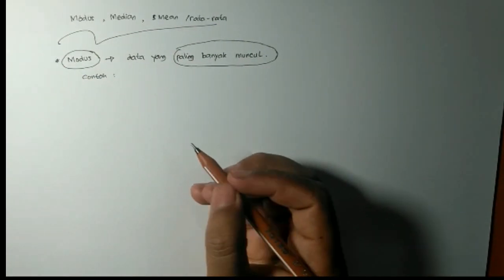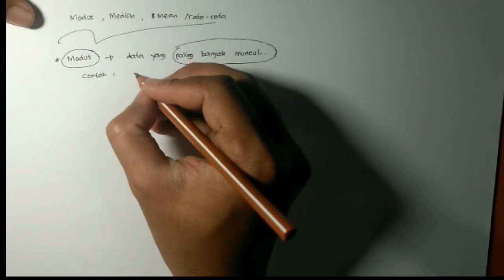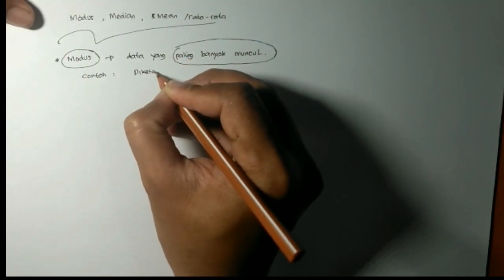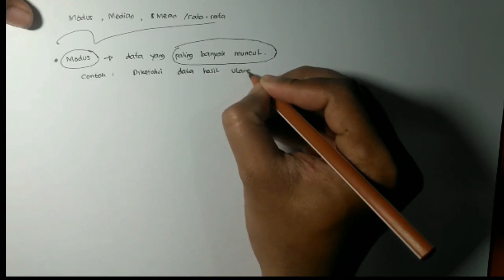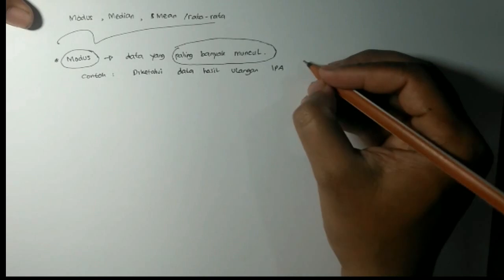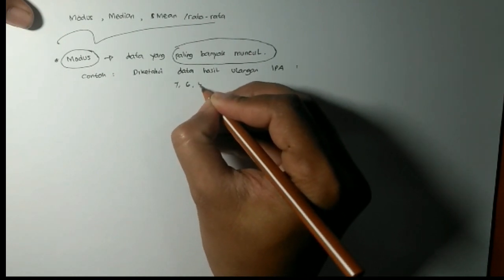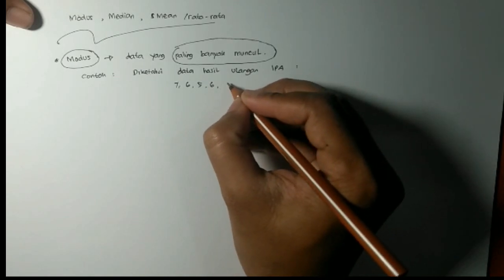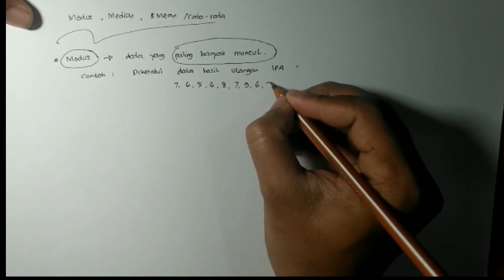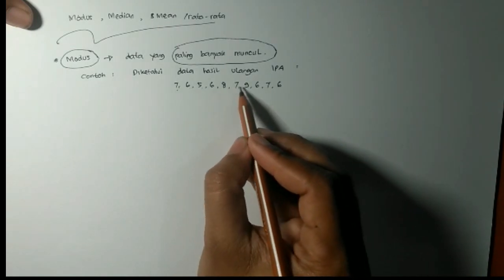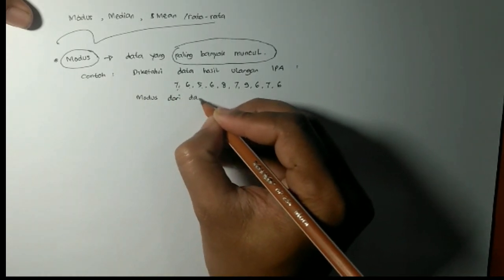Contohnya misalkan. Misalkan diketahui data hasil nilai ulangan IPA. Jadi diketahui data hasil nilai ulangan IPA. Misalkan 7, 6, 5, 6, 8, 7, 9, 6, 7, 6. Ini misalkan ini ya. Pertanyaannya adalah modus data dari nilai ulangan IPA tersebut adalah misalkan seperti itu.